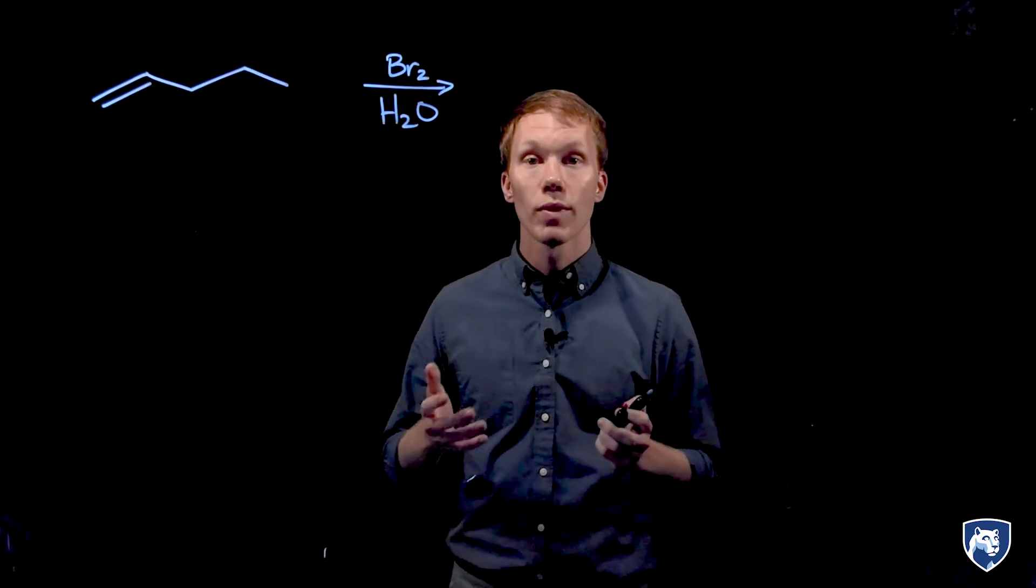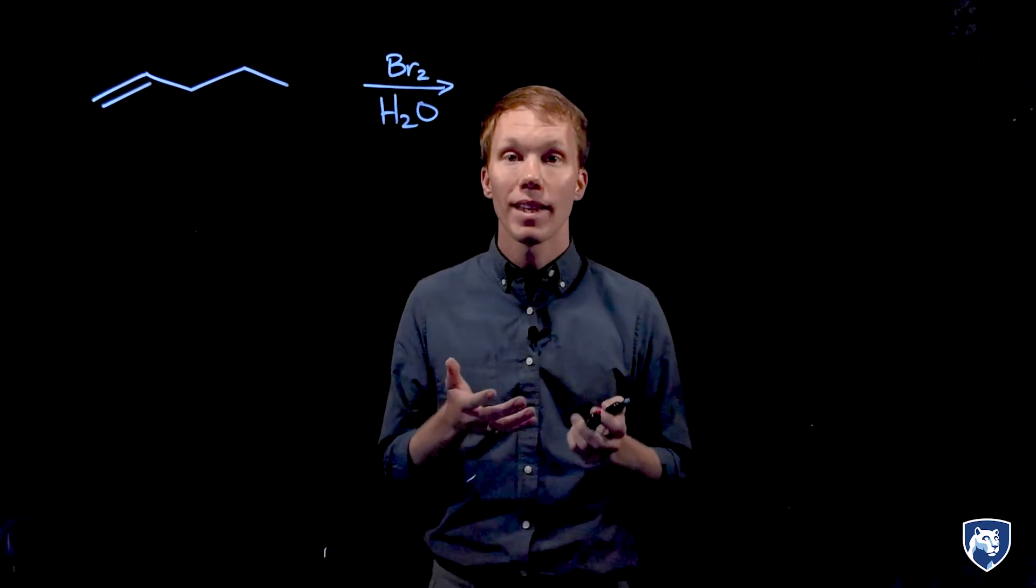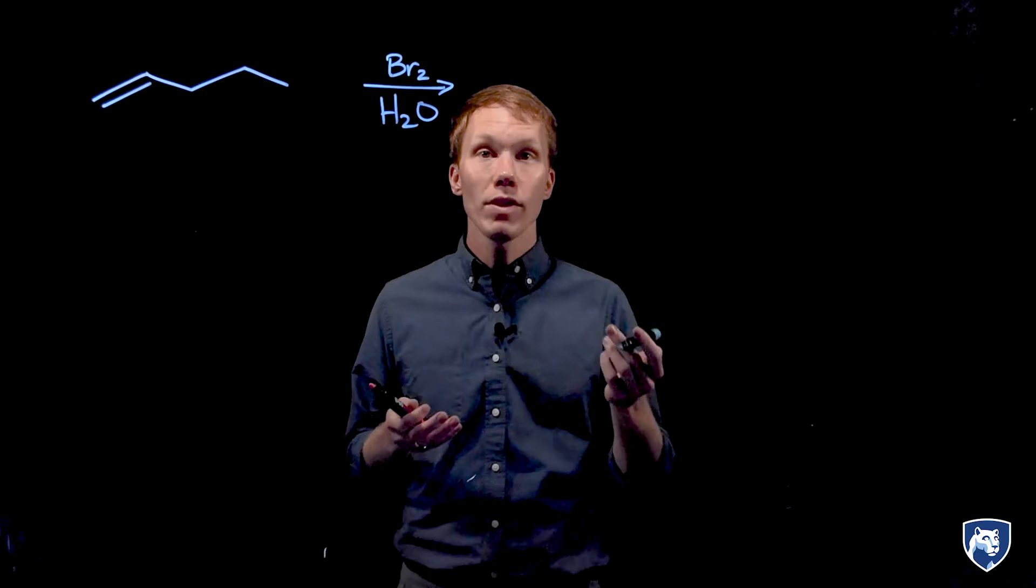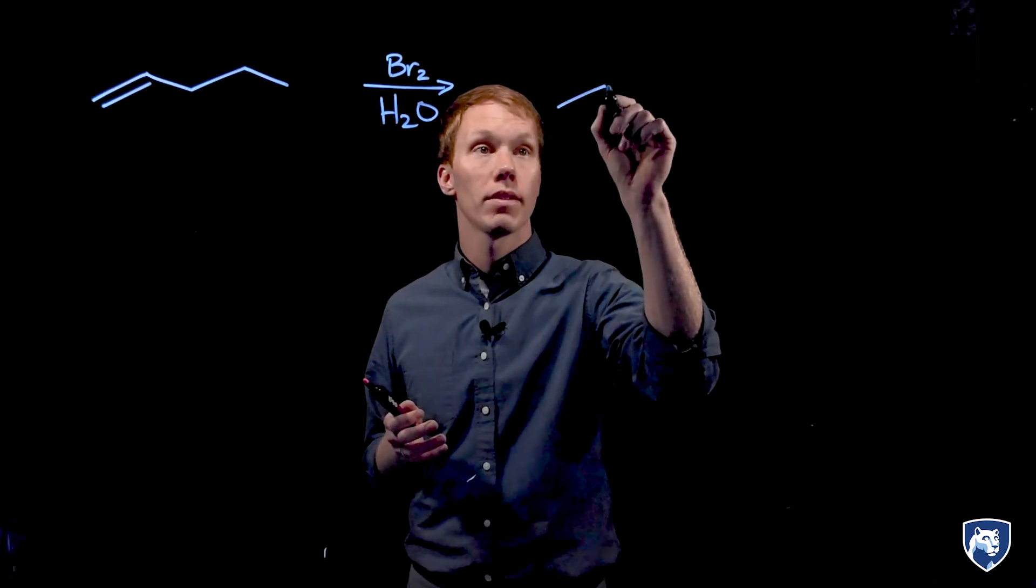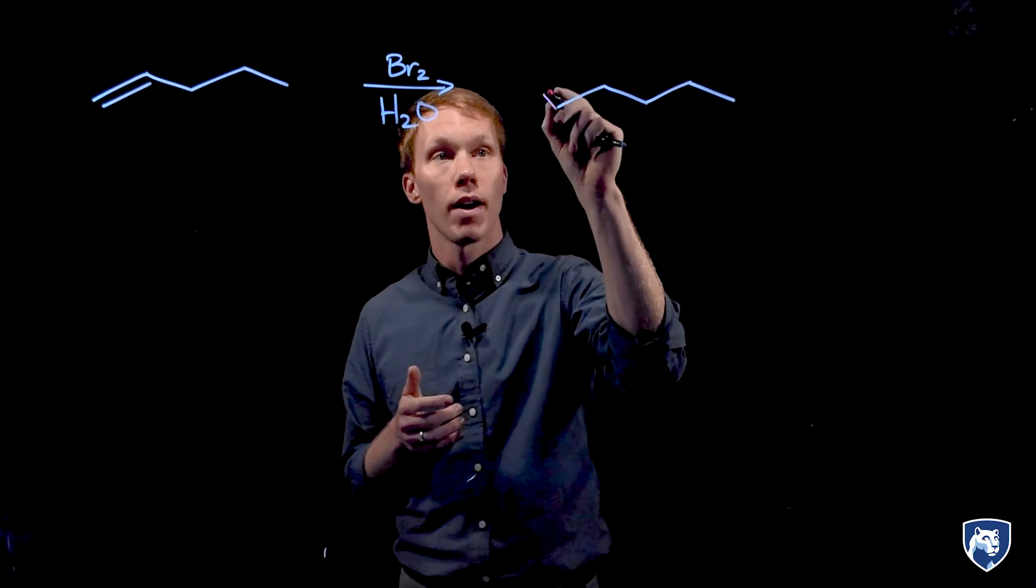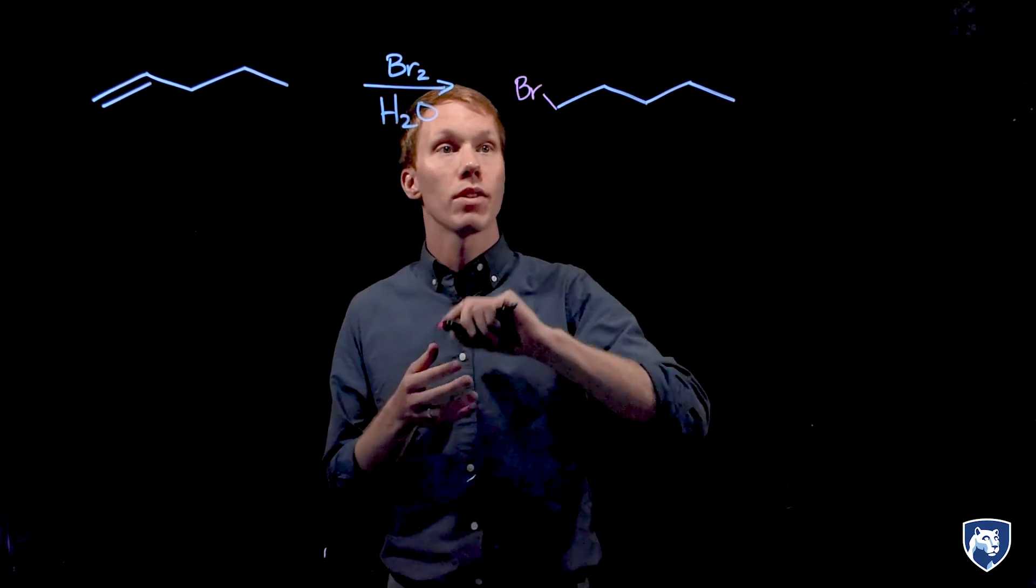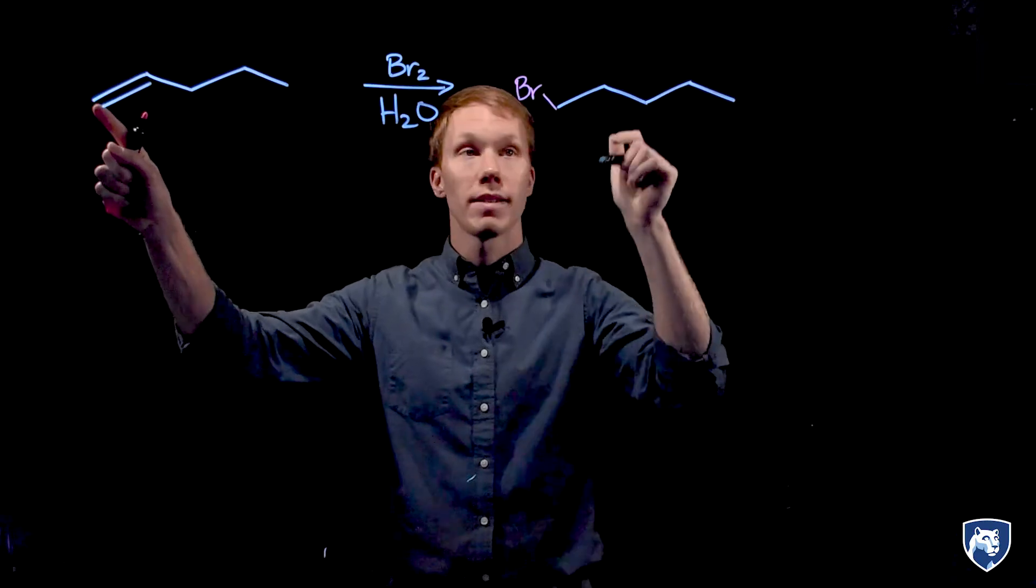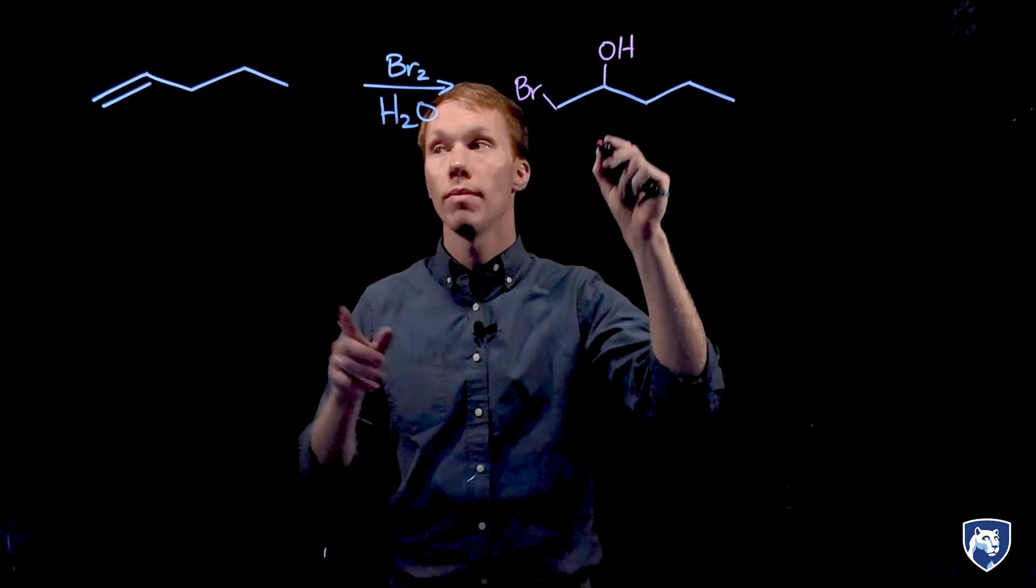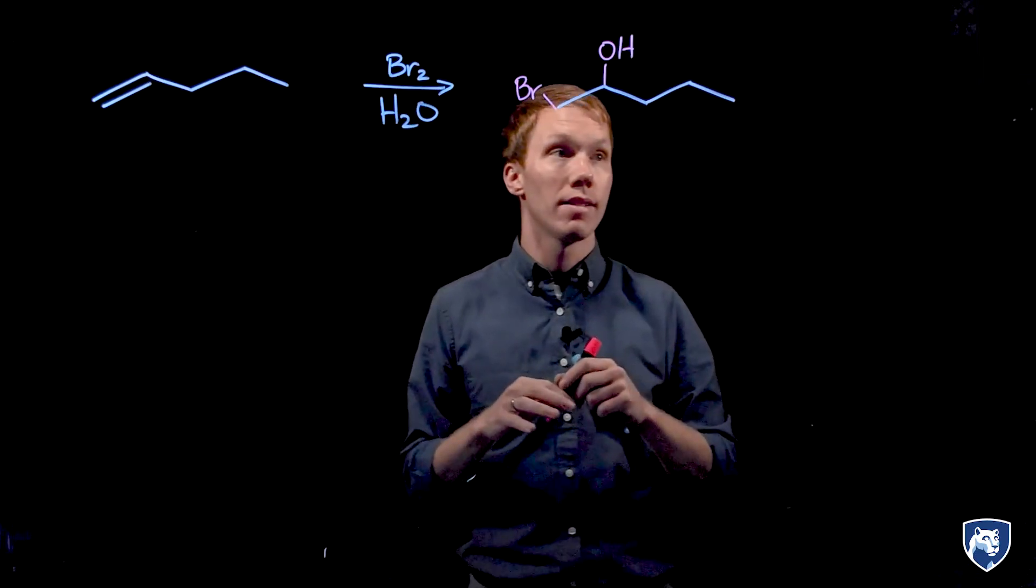Let's first take a look at the regioselectivity of this reaction. Is one constitutional isomer produced in excess of the other? We have to look at the experimental evidence from this. So when we carry out this reaction in the lab, isolate and purify our products, we find that the major product has the bromine added to the primary site, the less substituted side, and the alcohol adding to the more substituted site. In this case it is secondary.